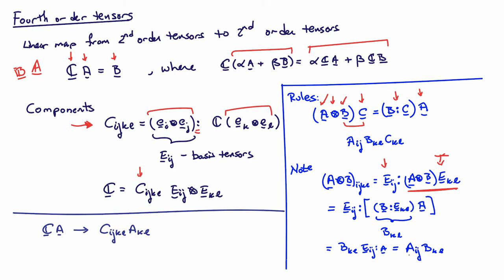A few more operational rules: the index form of C acting on A — a fourth-order tensor acting on a second-order tensor — is C_IJKL A_KL. So C acting on A contracts the last two indices of C with the two indices of A, matching pairwise as KL. If I have a second-order tensor B double-contracted with a fourth-order tensor C, I end up with a double contraction on the first two indices of C with the two indices of B. And if I combine both, B double-contracted with C acting on A gives B_IJ C_IJKL A_KL — no free indices, just a scalar.